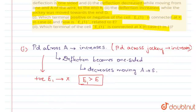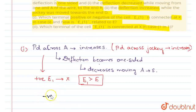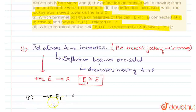This is just exactly the reverse case. So when the potential difference increases, the negative terminal of E1 is connected at X. So the negative of E1 is connected to point X. Which terminal of the cell is connected at X? The negative of E1 is connected to X.